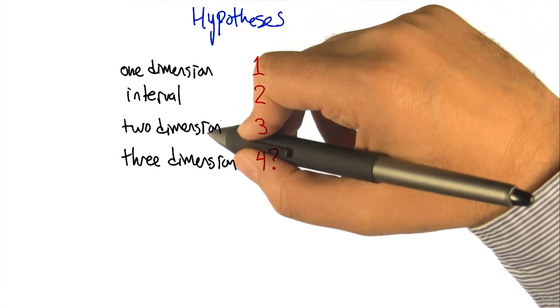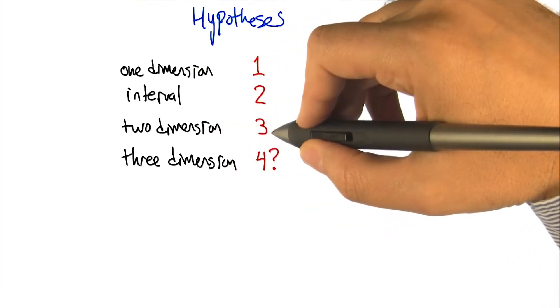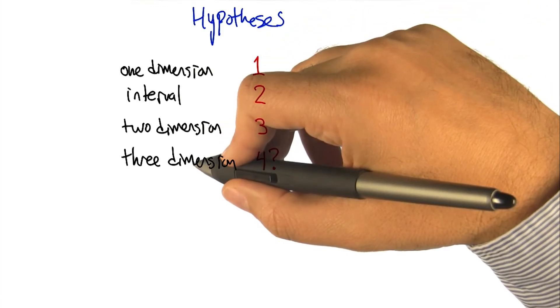the VC dimension was one. When we did the interval, it was two. When we did two dimensional linear separators, it was three. And you're wondering whether in three dimensions, it would be four.